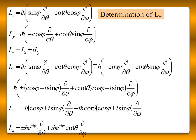Using the values of Lx and Ly, we can also find the raising and lowering operators L+ and L−. Since L+ = Lx + iLy and L− = Lx − iLy, substituting and simplifying gives: L± = ±ℏ e^(±iφ) [∂/∂θ ± i cotθ ∂/∂φ]. Using these results, we can represent everything in terms of spherical polar coordinates.